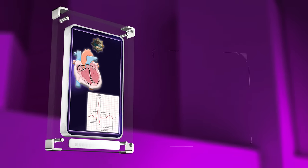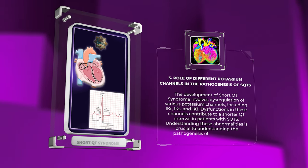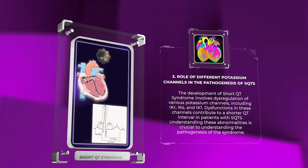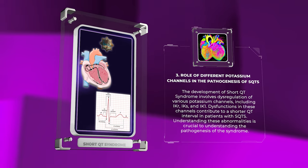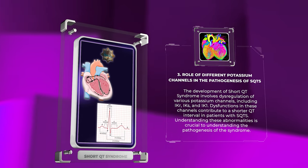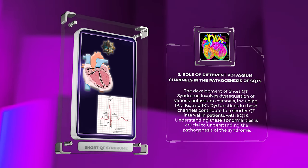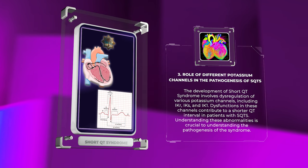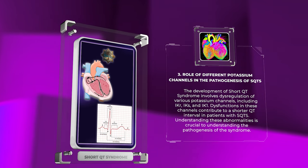The development of Short QT Syndrome involves dysregulation of various potassium channels, including IKr, IKs, and IK1. Dysfunctions in these channels contribute to a shorter QT interval in patients with SQTS. Understanding these abnormalities is crucial to understanding the pathogenesis of the syndrome.